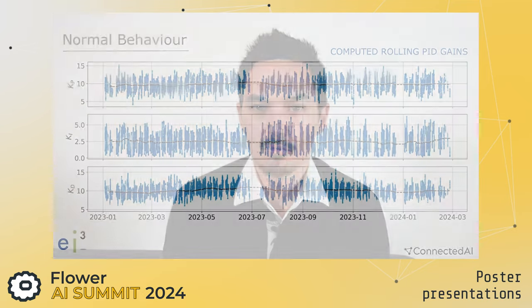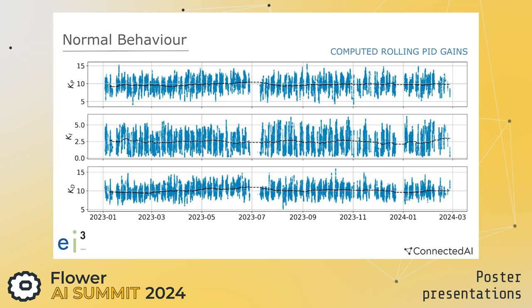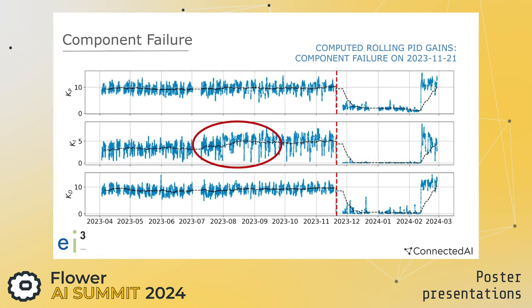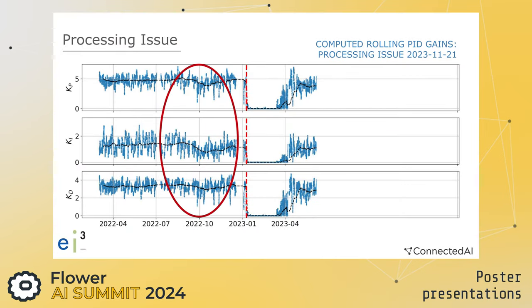There are, however, some components detected through this anomaly approach where we see an increase of the integral gain followed by all gains dropping drastically — and when we analyzed that, we realized the component had actually failed. We also observed another behavior where all gains start to behave very erratically, which corresponded to a processing issue. This is a perfect example of how through this analysis we are able to detect processing issues, not just for the component that the PID is directly controlling. Applying this analysis to a large scale of real-world data made us confident this can be an essential future approach for predictive maintenance.